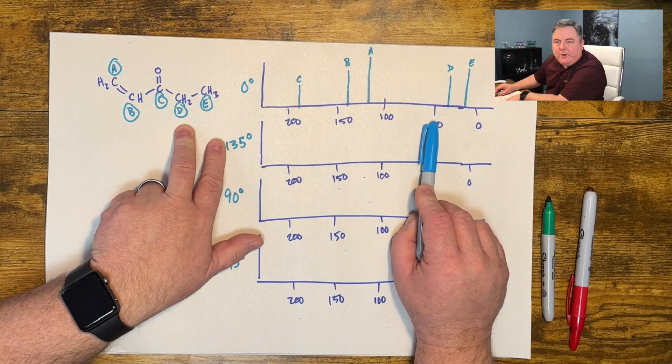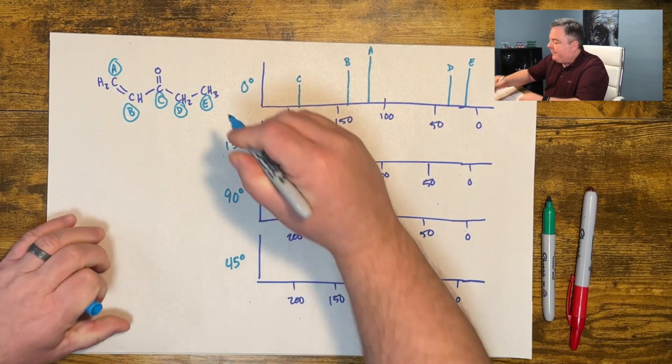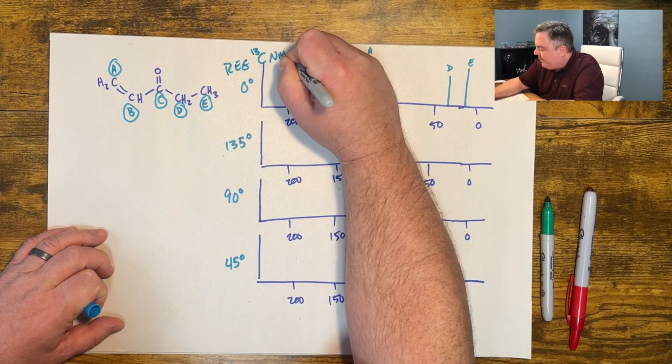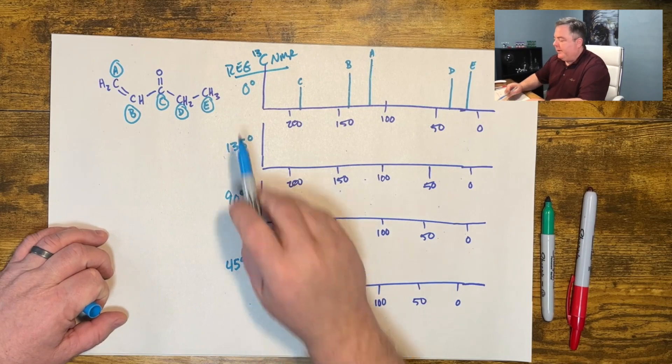And two of them were regular carbons between 0 and 50. That's a regular carbon-13 NMR. That's what it looks like, sometimes called the zero degree carbon NMR. Think about looking at it straight on.